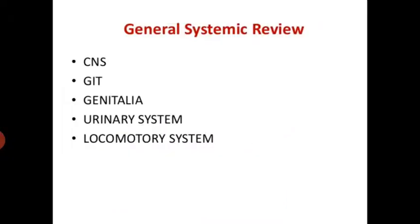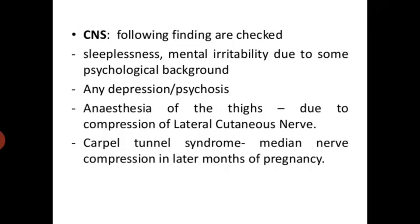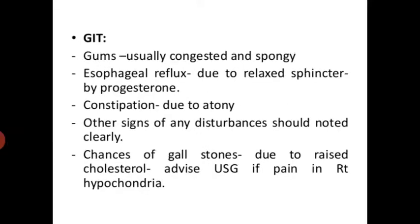General systematic review: CNS — common findings include sleepiness, mental irritability due to psychological background, any depression or psychosis, anesthesia of the thighs due to compression of the lateral cutaneous nerve, or carpal tunnel syndrome. GIT: gums are usually congested and spongy. Esophageal reflux occurs due to a relaxed sphincter caused by progesterone. Constipation is due to atony of the intestine. Any signs of disturbance should be noted clearly. There is a chance of gallstones due to rising cholesterol — advise ultrasound if there is pain in the right hypochondriac region.